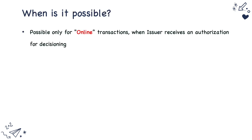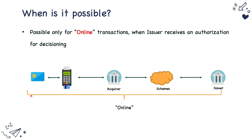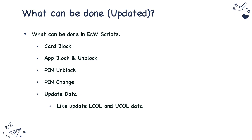EMV scripting is possible only for online transactions — that is, when a transaction is performed and the issuer receives that authorization for decisioning. It is not possible for offline transactions. In an offline transaction, the transaction is never sent to the scheme; it is decided between the card and the terminal, so the issuer cannot send an issuer script back. In an online transaction, the transaction goes to the issuer for decisioning and the issuer can send the script as part of the response.